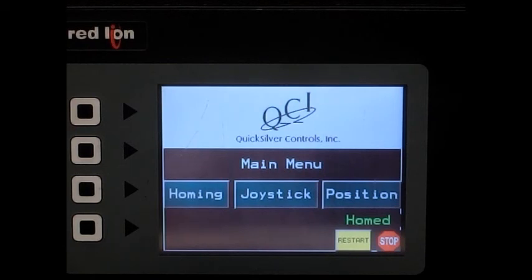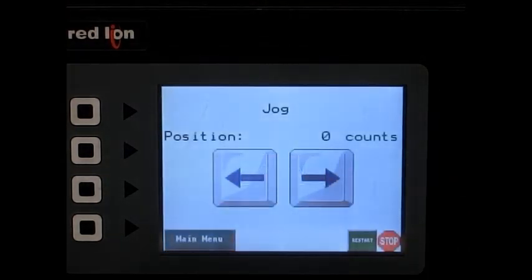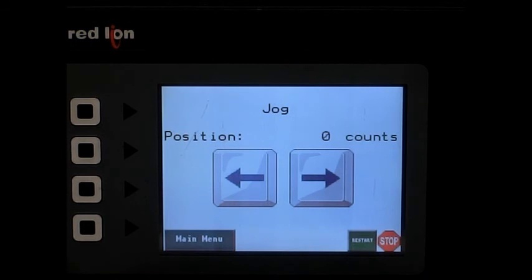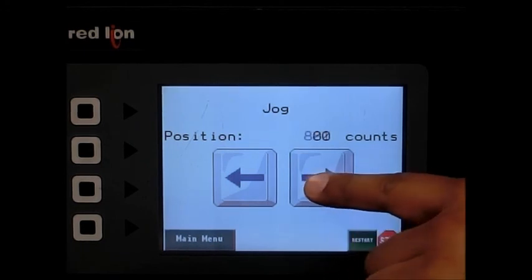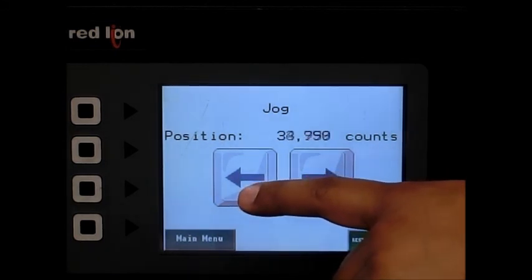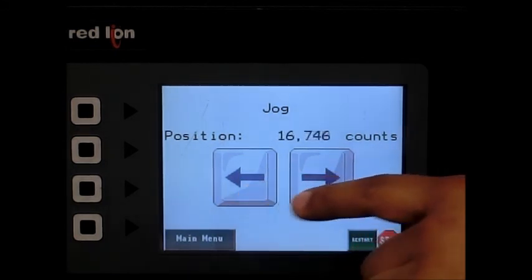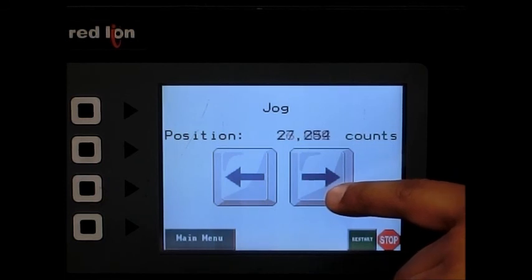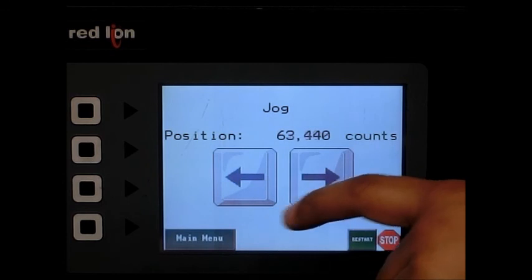A joystick function and a position function. We'll go into the joystick function. In the joystick function, we can jog the motor in either direction by pressing and holding one of these jog buttons. And as we jog the motor, we'll notice the position of the motor updating.